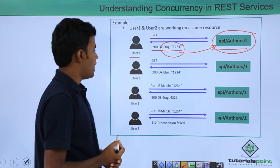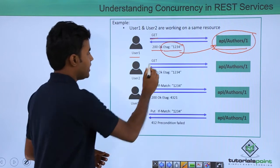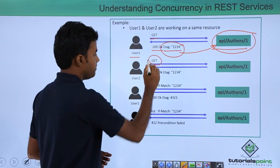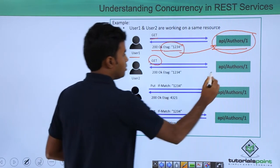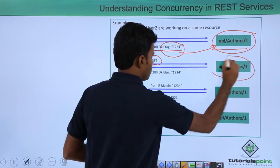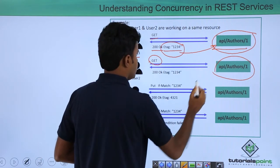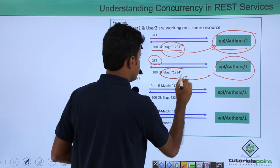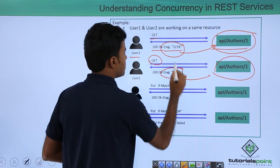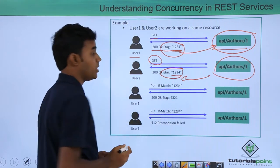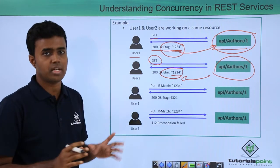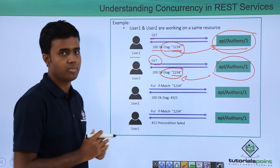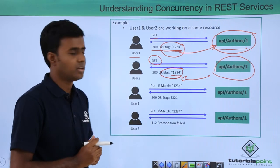User 2 also sends a GET request to the same resource and gets the same ETag. Note that both ETags are the same because both users are working with the same resource.